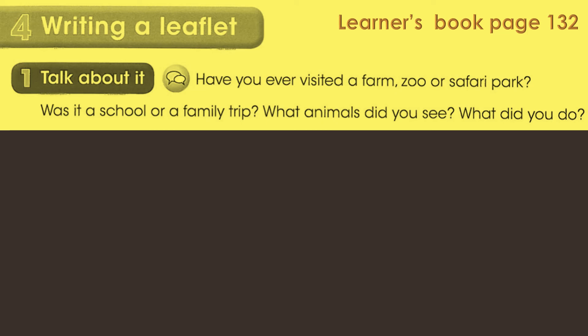Now go to your learners' book page 132. This is talking time, so you need to talk and speak. Pause the video, read the questions, and try to recall all you know — just to speak. Record yourself if you don't have anyone to speak to. Have you ever visited a farm, zoo, or safari park? Was it a school or a family trip? What animals did you see? What did you do? Think about this visit or trip and try to remember everything.